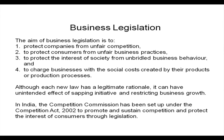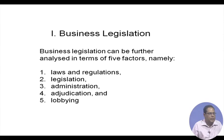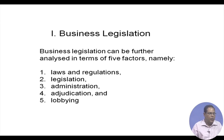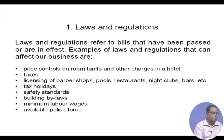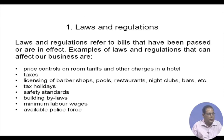Business legislation can be further analysed in terms of five factors: laws and regulations, legislation, administration, adjudication, and lobbying. Laws and regulations refer to bills that have been passed or are in effect. Examples include price controls on room tariffs and other charges in a hotel, taxes, and licensing of barber shops, restaurants, night clubs, and bars.